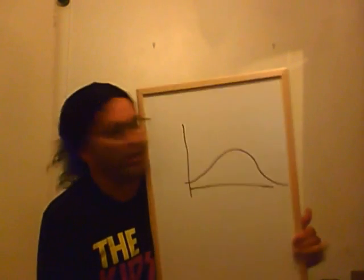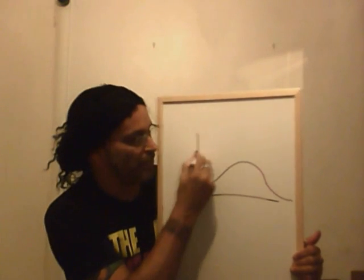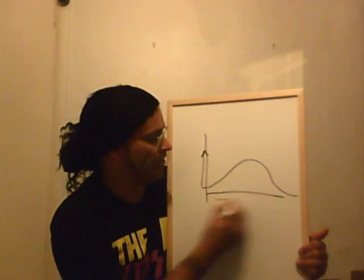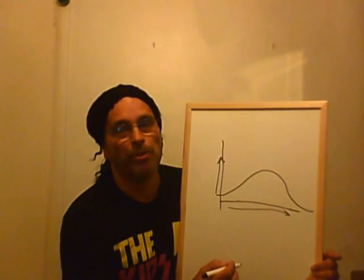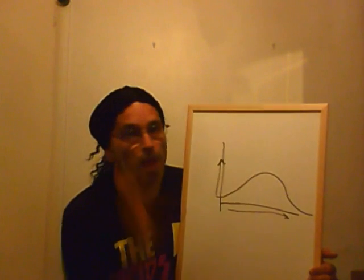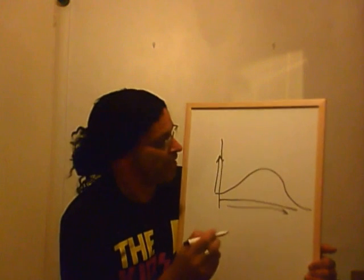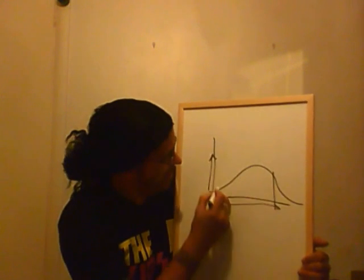You put an axis like this, okay? Vertically represents number of people, and horizontally represents the people who have been following the drama.